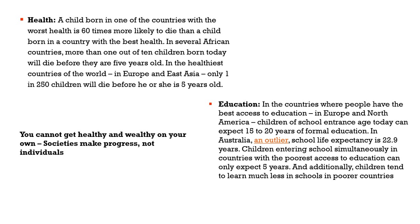A child born in one of the countries with the worst health is 60 times more likely to die than a child born in a country with the best health. The very fact that globally these are the realities — where in one country a child is 60 times more likely to die — suggests social inequality of the highest order and inequality of opportunities that need urgent attention. In several African countries, more than 1 out of 10 children born today will die before they are 5 years old. In the healthiest countries of Europe and East Asia, only 1 in 250 children will die before age 5.